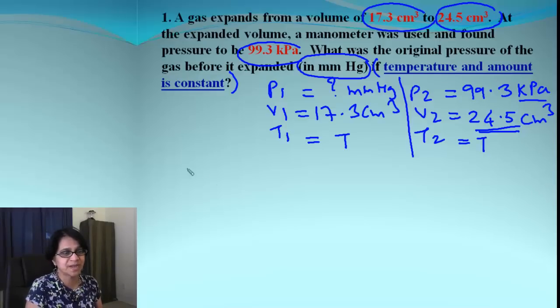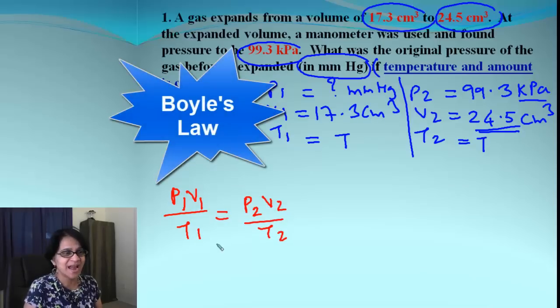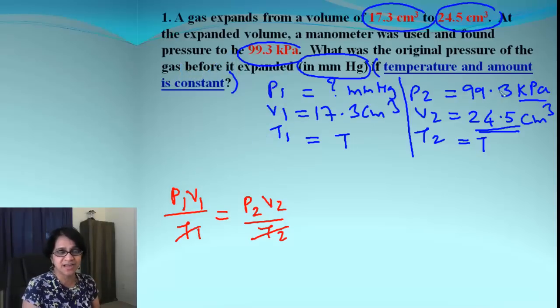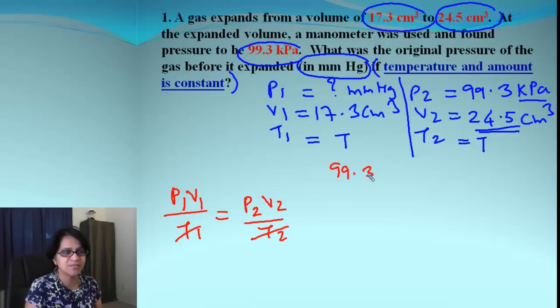Let's get the equation. That is P1V1 over T1 is equal to P2V2 over T2. And the temperature is cancelled because that's same. But now we need to make sure that we are converting that pressure in same units. So since we want it in millimeter of mercury, let's convert what is given to us in millimeters of mercury.